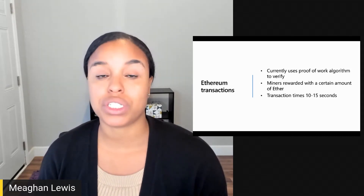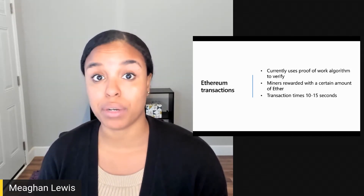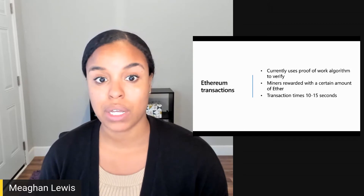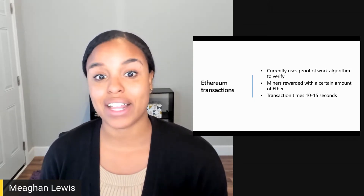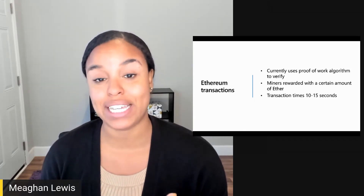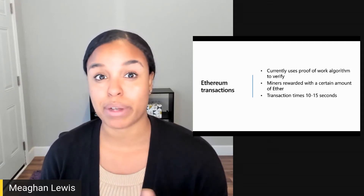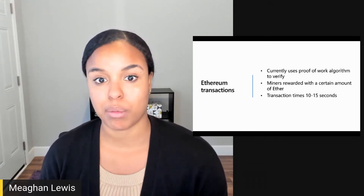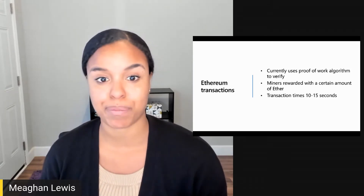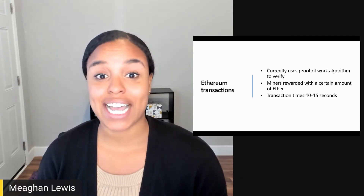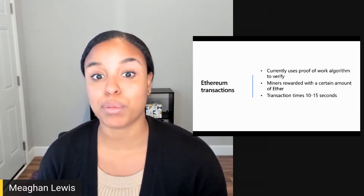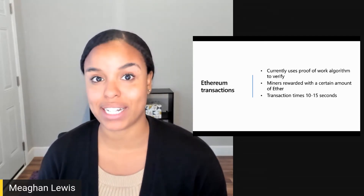A miner is able to solve the current block problem using the proof-of-work algorithm. When a miner validates a new block, they're rewarded with a certain amount of Ether. Currently, that amount is about 2 Ether, but this amount can continue to change and reduce over time. Transactions take about 10 to 15 seconds to be verified, as opposed to 10 minutes with Bitcoin.